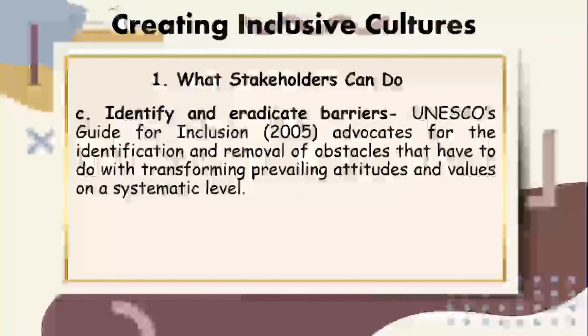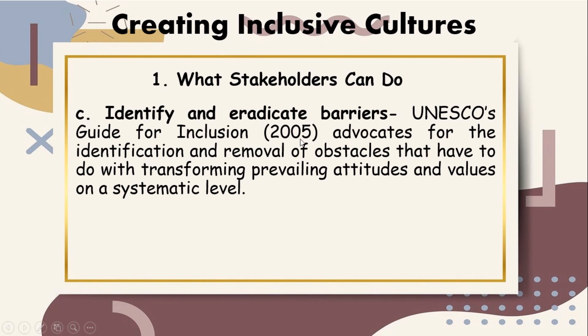Next, identify and eradicate barriers. UNESCO's guide for inclusion advocates for the identification and removal of obstacles that have to do with transforming prevailing attitudes and values on a systematic level. The Philippine government seems to be in consonance with this in the light of its existing legislative policies that ground the undeniable importance of inclusion. It is also continuously reorganizing structures in education and implementing programs that highlight the need for primary stakeholders — like schools, parents, and policymakers — to acquire more understanding and capacity building to manage an inclusive environment.